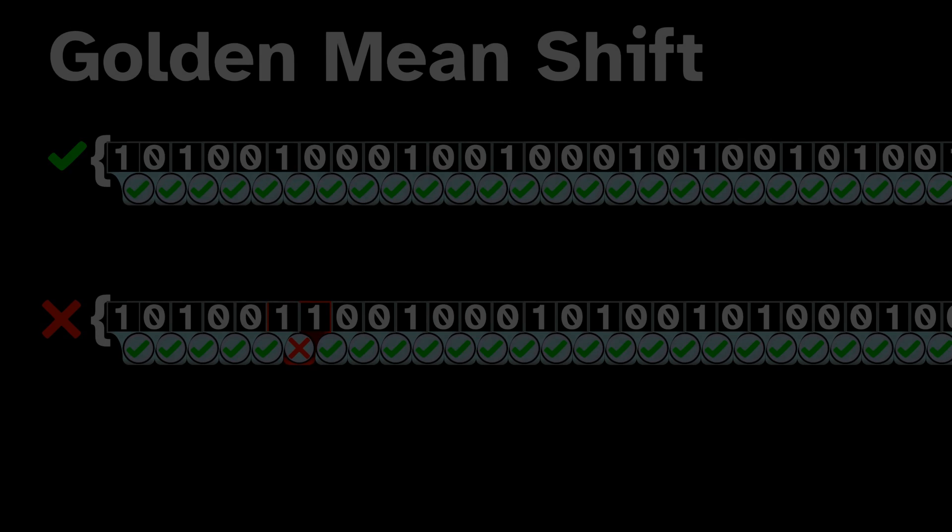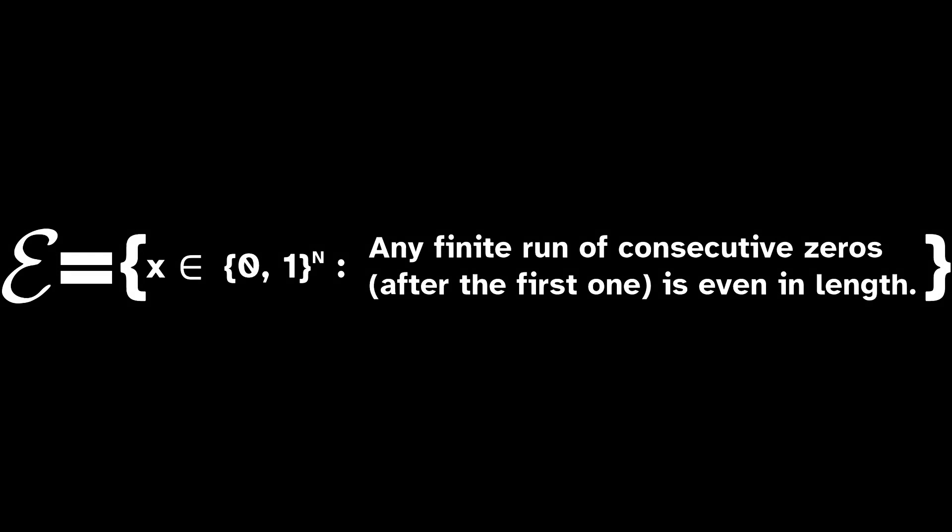Using this description, we can also see why the even shift is not an SFT. No finite machine could ever validate every sequence in E because, whatever finite window length we choose, a sequence could always have a longer run of consecutive zeros. The validators also can't communicate with each other, so they can't propagate information from one end of the consecutive zero chain to the other.